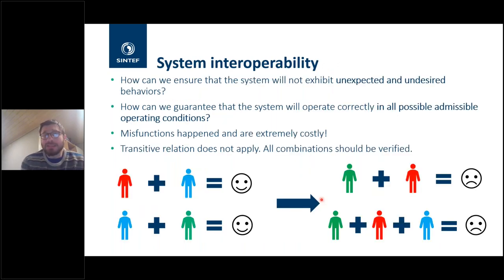What is basically system interoperability is how we can ensure that the system will not exhibit this kind of unexpected and undesired behaviors. How we can prevent that the system will not work in the way that we don't want. And also, how can we guarantee that the system will operate correctly in all possible conditions. This is also another strict requirement because if we have a fault in such an offshore system, this can be terribly expensive and it happened in the past.